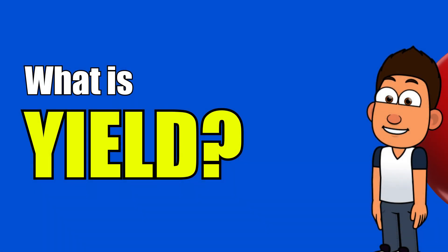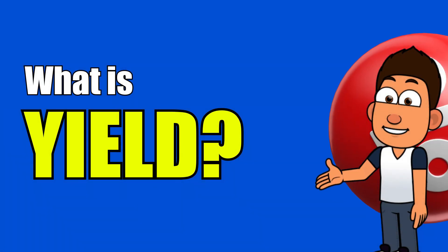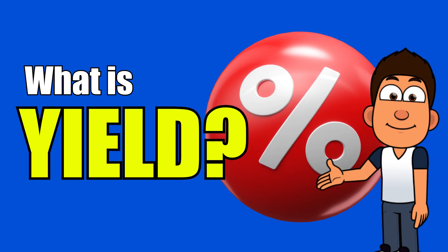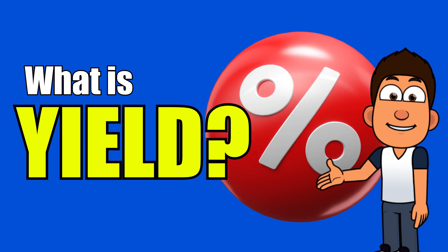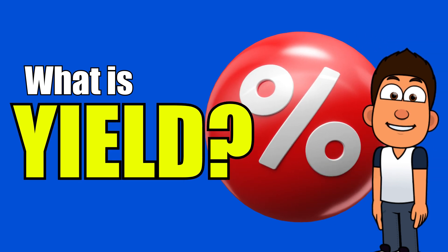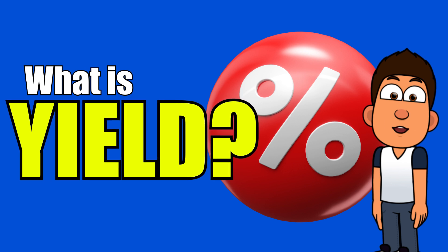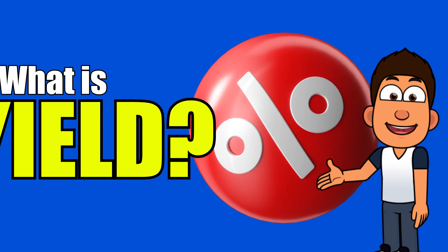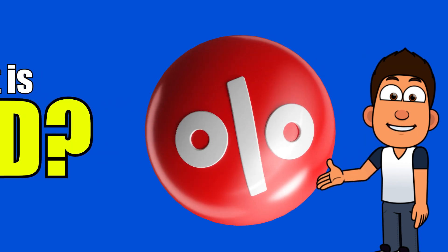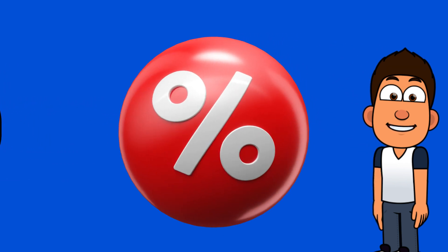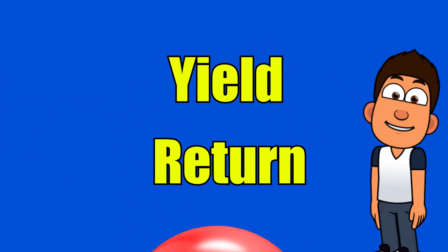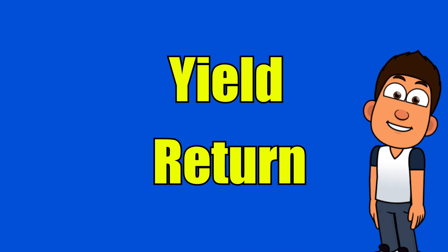What is yield? Yield refers to the amount of income that an investment generates over time. It is calculated by adding interest or dividends to the investment and then dividing it by the investment's value. It is usually expressed as an annual percentage and does not include capital gains.